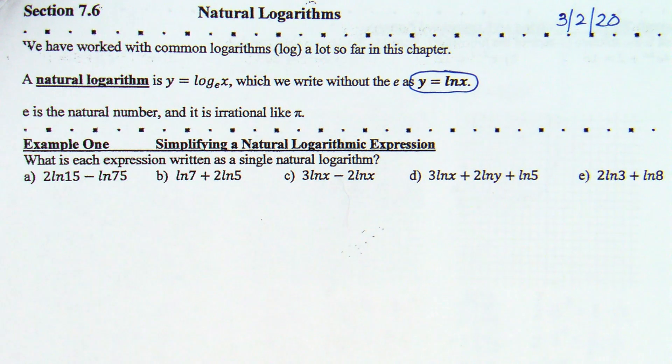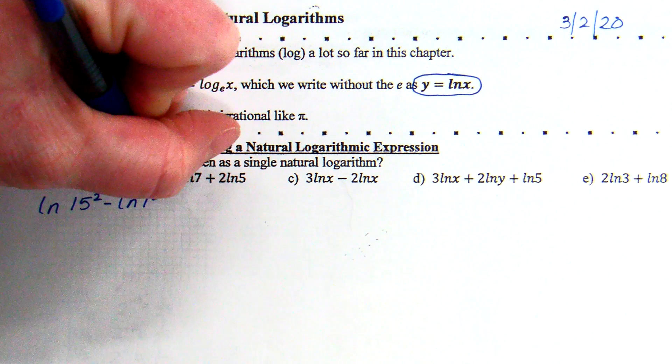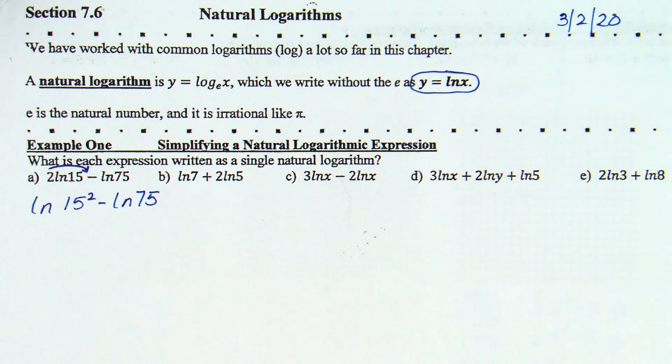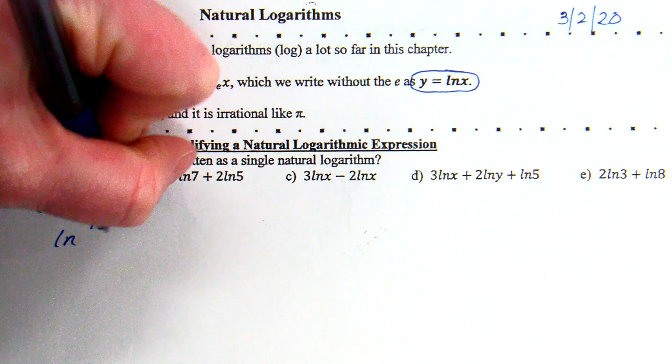We're going to move it up to the power. So, when I rewrite this, this is going to be the natural log of 15 squared minus the natural log of 75. Two logs being subtracted can be rewritten as one log where the insides are divided. So, natural log of 15 squared divided by 75.